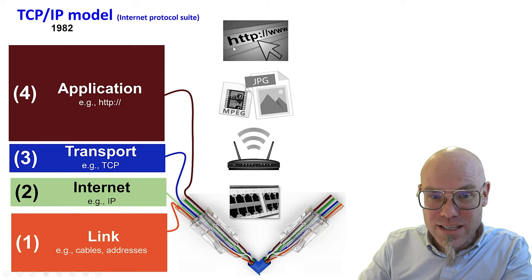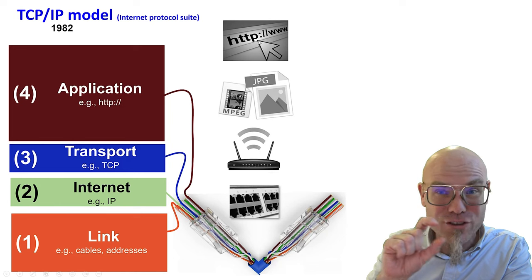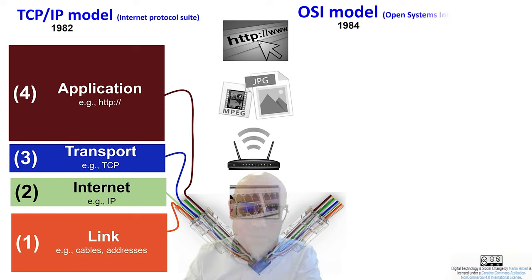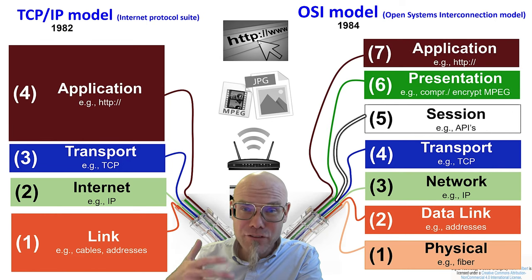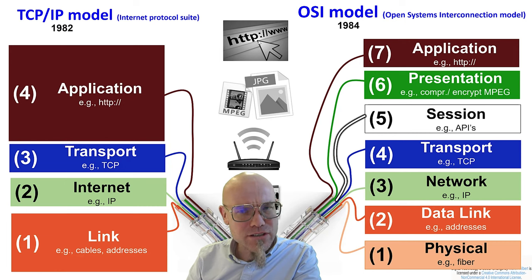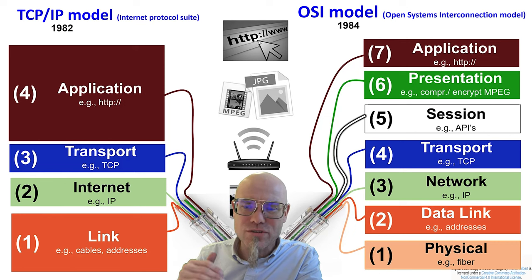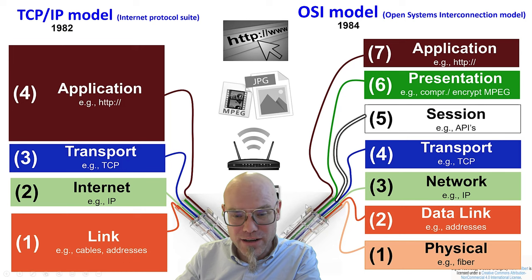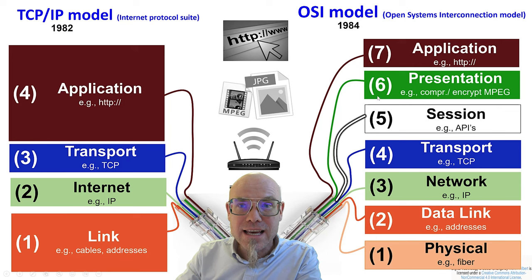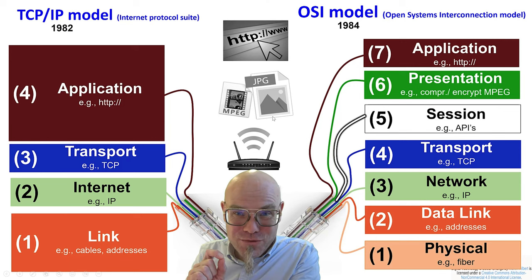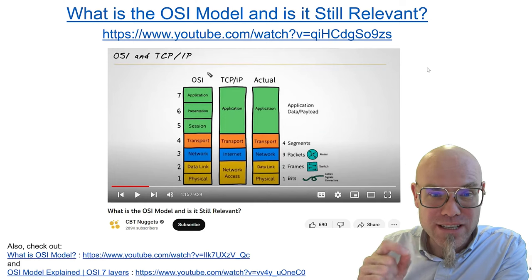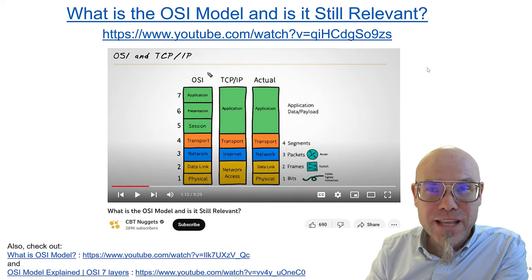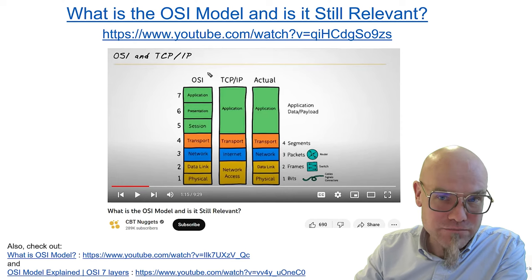One famous application protocol that you always see is HTTP — when you open a URL or web page, you still see that. Around the same time, engineers went more fine-grained. That's 1984, and they made seven layers out of it — the OSI model. If you work in a company, you'll hear engineers talking about layer five, layer two, and so forth. The link layer is basically split into two, and the application layer is split into three. Please check out the videos to learn more about the OSI model and the TCP/IP model and how they are used to structure digital realities.